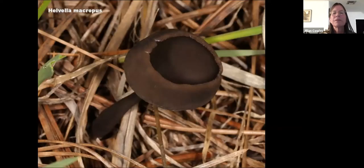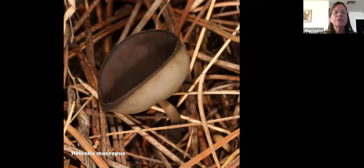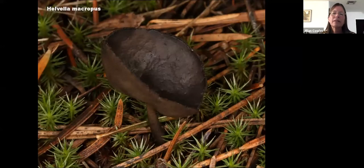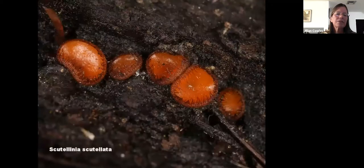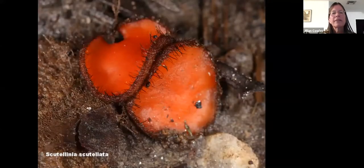Here's Helvella macropus, which is a black felt cup. Many Ascomycetes are shaped more or less like cups, because they can actively catapult their spores out — they don't have to hang with gills over the ground; they can shoot their little spores. Here's a more mature one with moss next to it for scale. These are called Scutellinia scutellata — the eyelash cup fungi — named for obvious reasons: they look like they have little eyelashes around them.